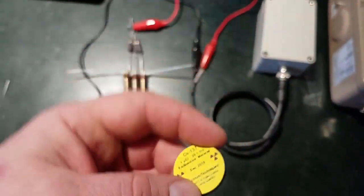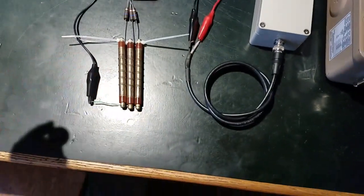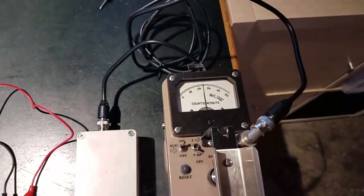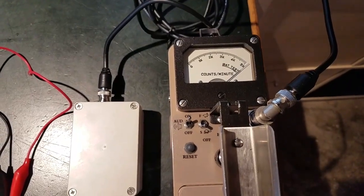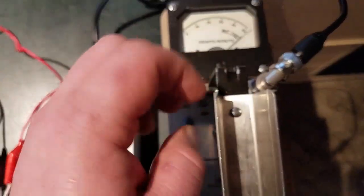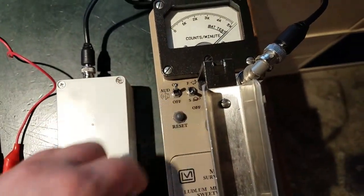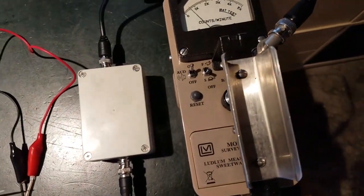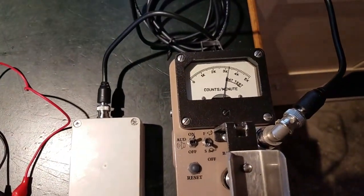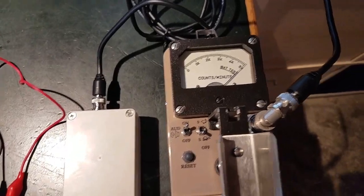With the one microcurie of cesium 137, buries the needle at about a centimeter away. Change it up to the 10x scale. Needle buried again.